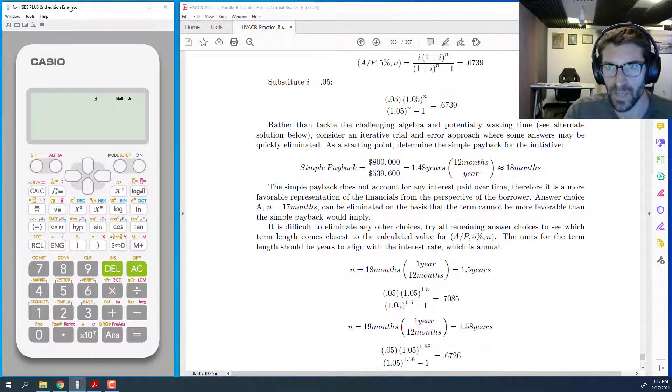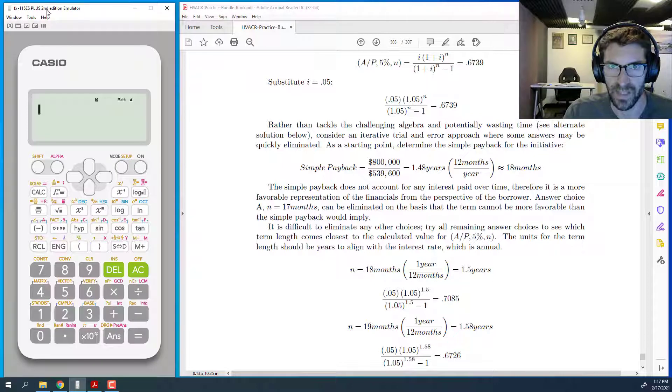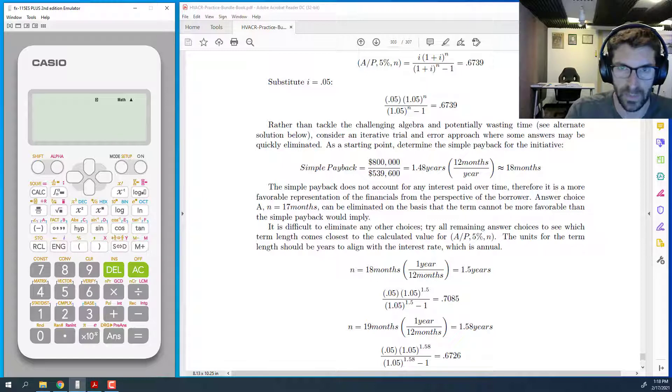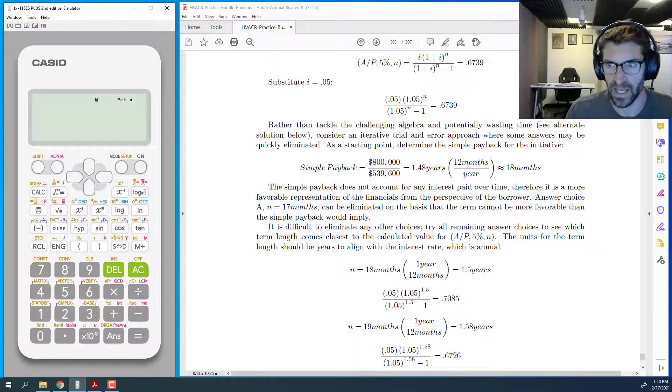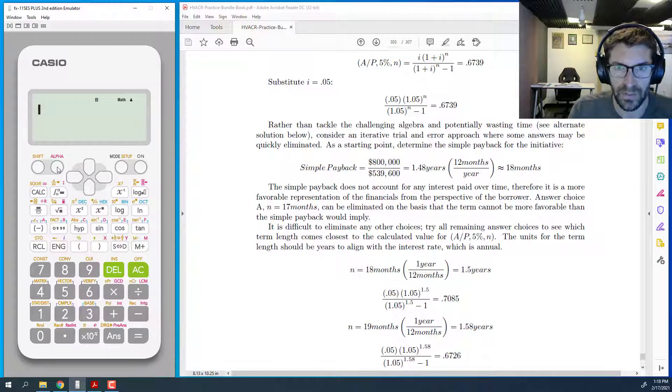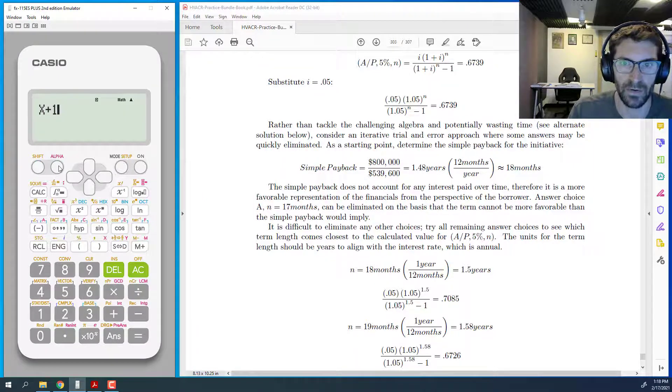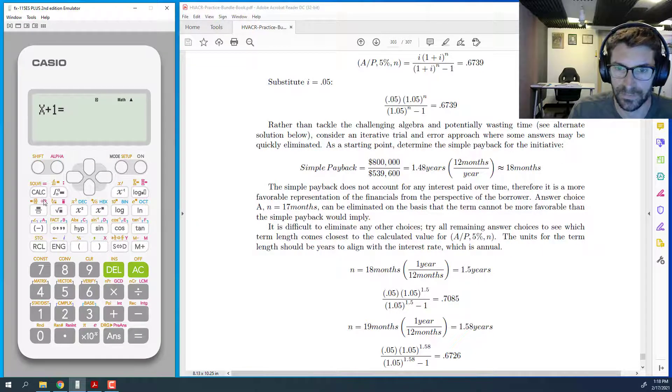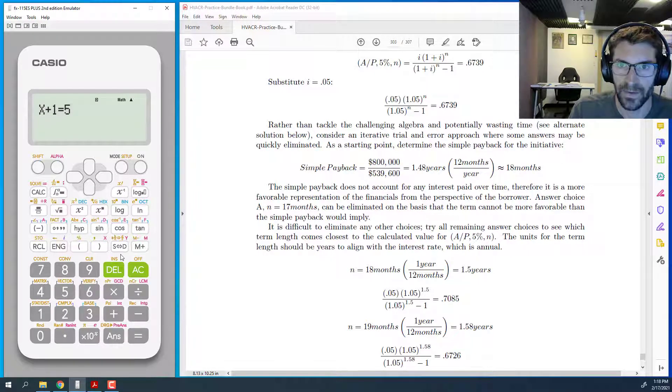So I'm going to do a simple example first, and then we'll do this specific example. Imagine if you have an equation, something simple like x plus one equals five, right? Everybody can do that in their head. But if you wanted to use your calculator to solve that, as opposed to subtracting the one over to the other side and doing the algebra on paper, without ever putting pen to paper, you can actually type in your calculator, alpha x plus one equals, but now I'm not going to hit the equals sign. I'm going to write alpha equals, and then five.